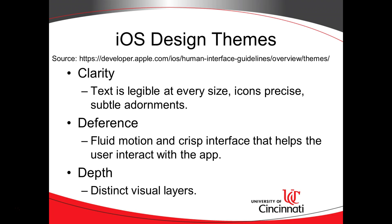The first iOS design theme is clarity. Text is legible at every size, icons are precise, and there are subtle adornments. In other words, we don't want to over-complicate the user's view of the situation. Show them only what they need and when they need it. Think about economy of words — how much can we say with how little text?